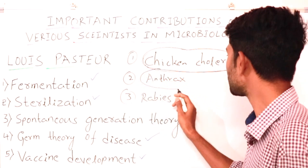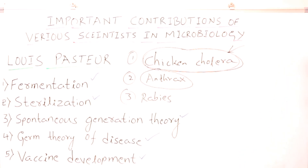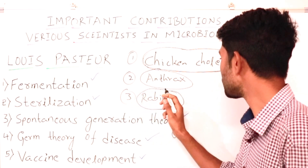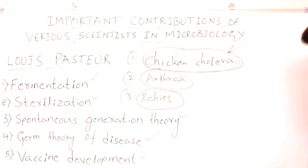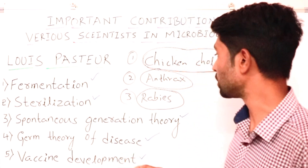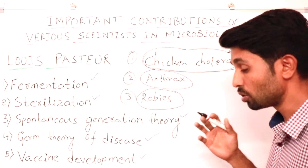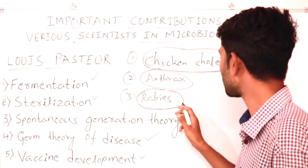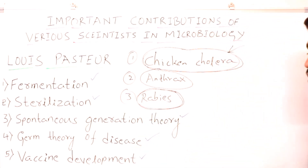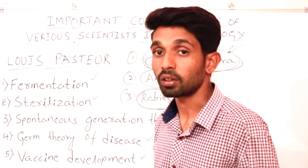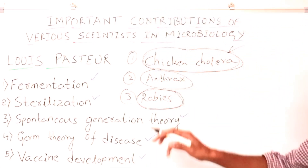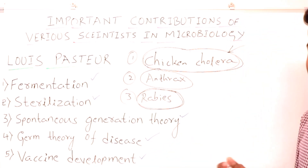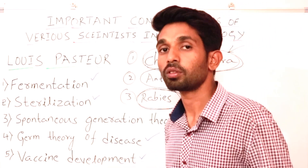Anthrax is a disease which mainly affects sheep and cattle, and he prepared a vaccine for anthrax as well. The third and most dangerous disease at that time was rabies, which comes from a dog bite and directly affects the human nervous system. He studied the rabies microorganism and prepared a vaccine for rabies, which we still use today. This is all about the contributions of Louis Pasteur in microbiology — we truly thank him, because due to him and scientists like him, humans are still surviving very well.